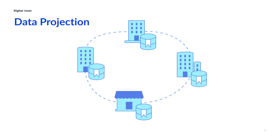Even though there are several participant nodes, if only two of them should have access to the data, the data will only be provided to the appropriate nodes through the synchronization domain. This level of privacy, designed in the DAML ledger model and the Canton protocol, allows for very powerful and secure data projection and data location that gives your business data sovereignty.